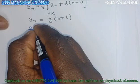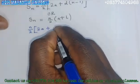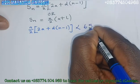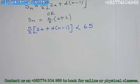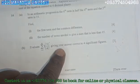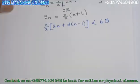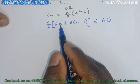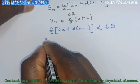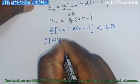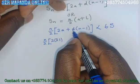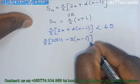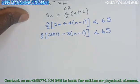So using S_N equals N over 2, open bracket, 2A plus D open bracket N minus 1, we need the number of terms which makes the sum less than 65. Substituting A equals 21 and D equals minus 3: N over 2 times open bracket 2 times 21 plus minus 3 open bracket N minus 1, and this is less than 65.